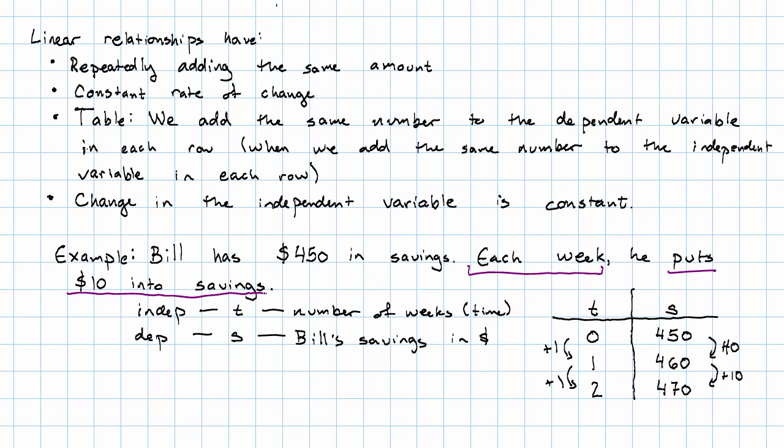The wording that tells us that this is going to be linear is wording that tells us that each week he adds the same amount to his savings. The thing that tells us in the table that this is linear, each week we add the same number.